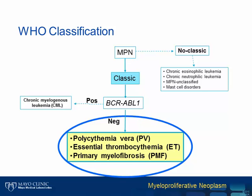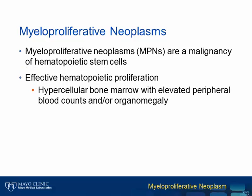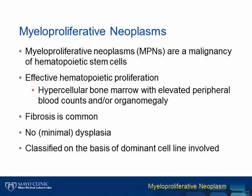The focus today will be the BCR-ABL negative classical MPNs: namely polycythemia vera (PV), essential thrombocythemia (ET), and primary myelofibrosis (PMF). Myeloproliferative neoplasm is a neoplasm of the hematopoietic stem cells, associated with effective hematopoietic proliferation where bone marrow cells successfully make it into the peripheral blood, resulting in peripheral blood cytosis. MPN patients usually present with hypercellular bone marrow and peripheral blood cytosis. Organomegaly is present or absent, myelofibrosis is common, whereas dysplasia is usually not evident.